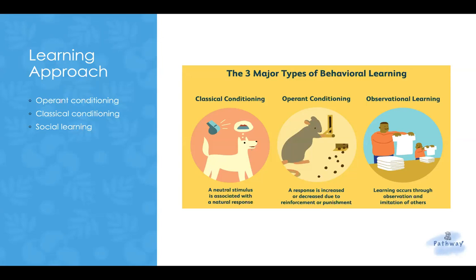Strict behavioral approaches follow the idea that we should observe the observable and not examine mental processes, as they cannot be directly seen. Behaviors can be directly seen, so we have objective measures of behavior.